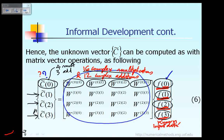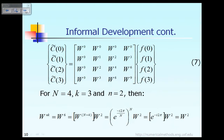Equation 6 shows that to figure out the unknown vector C-tilde, you must perform a matrix times vector operation. This specific example assumes N equal to 4, meaning 4 data points, so the coefficient matrix is N by N and the right-hand side vector F is 4 by 1. If the number of data points is larger than 4, this matrix-vector operation could become very expensive.